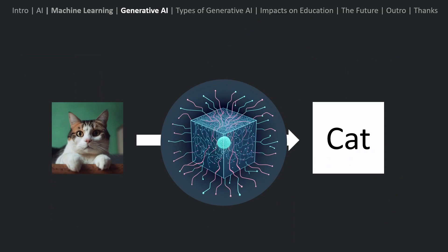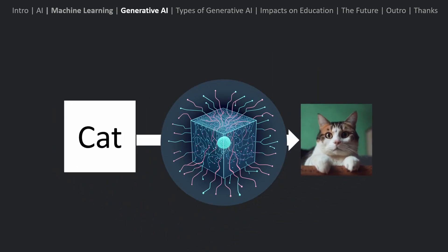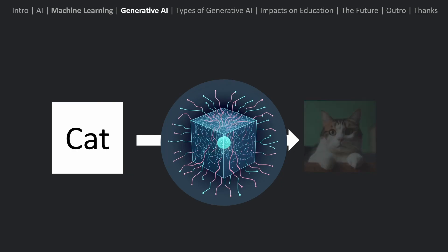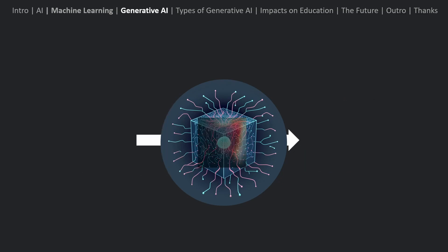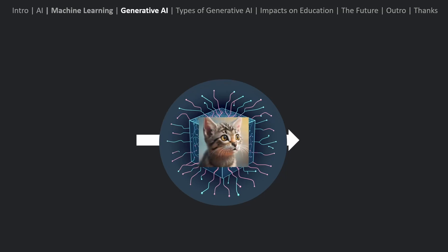Now that we understand how AI and machine learning works, we can talk about generative AI. In the last example, the algorithm was able to identify images of cats and dogs — we would input an image of a cat and it would give a text output of the word 'cat.' This means that somewhere inside, it has an understanding of what cats and dogs look like. Generative AI takes the same idea but flips it around. Now, we can give it the input — the word 'cat' — and it would use its understanding of what a cat looks like to generate an image of a cat.